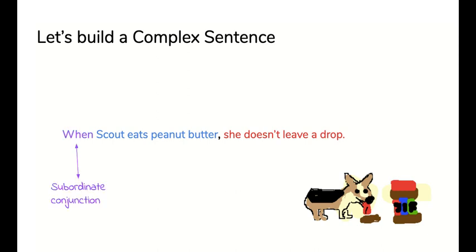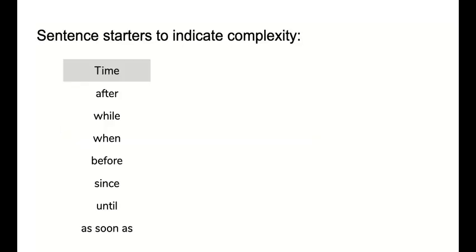Okay, so the when that I will be using purple for these kinds of words is called a subordinate conjunction. So to indicate time, you've got after, while, when, before, since, until, as soon as.